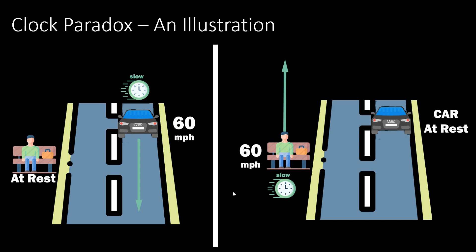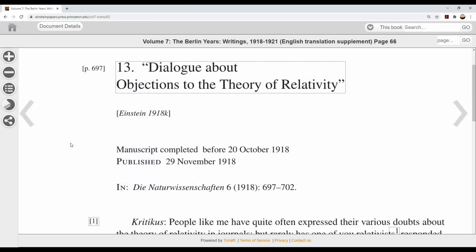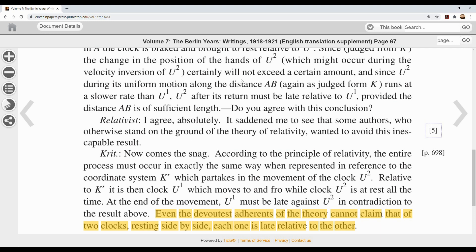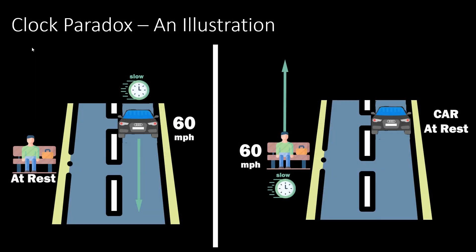You can't have both scenarios be valid and in both scenarios have slowing clocks. If you still don't think this is a problem, you are actually disagreeing with what Albert Einstein says himself. On the second page of this paper he describes the clock paradox. He says even the devoutest adherents of the theory cannot claim that of two clocks resting side by side, each one is slow relative to the other. Notice he tries to wiggle his way out with a little phrase, but the clock paradox shows us that there is illogic built in and something wrong somewhere.